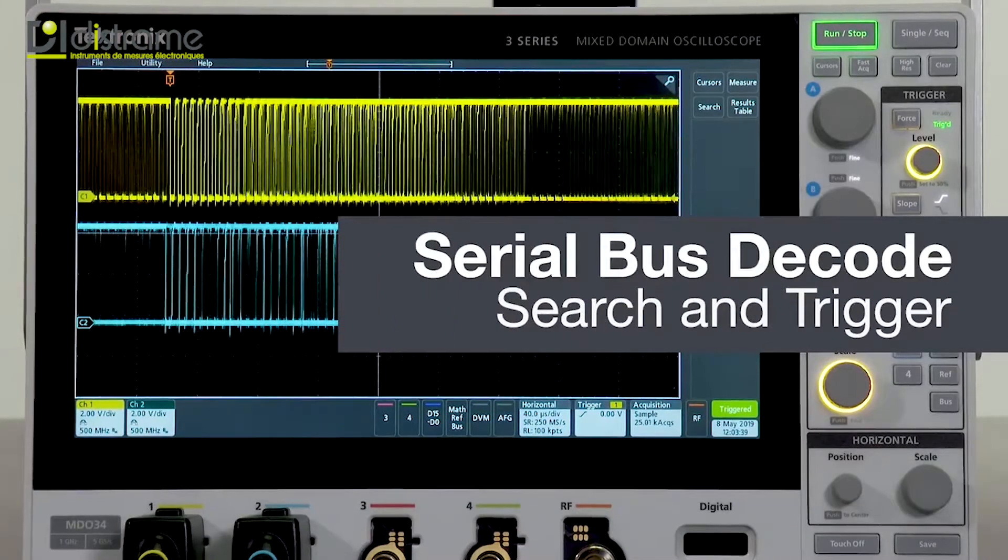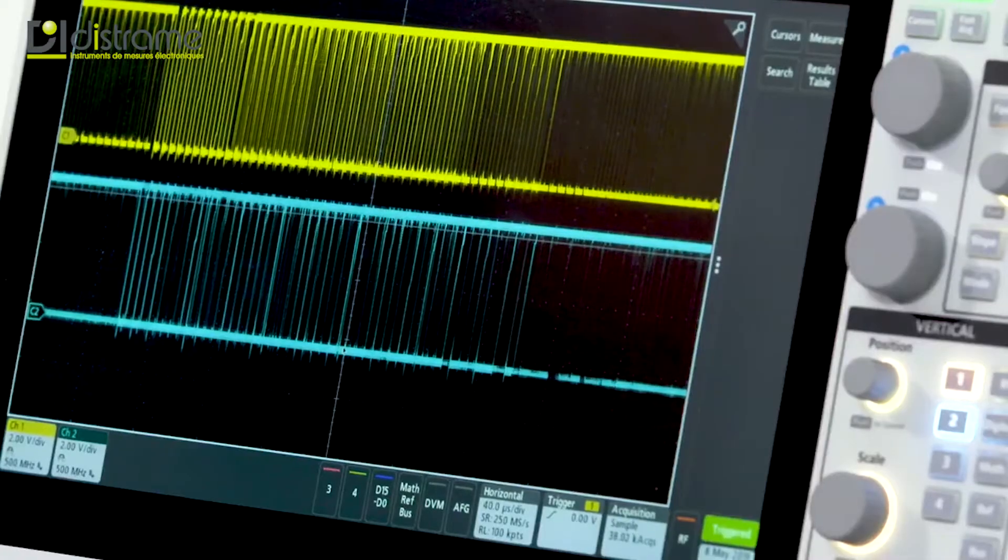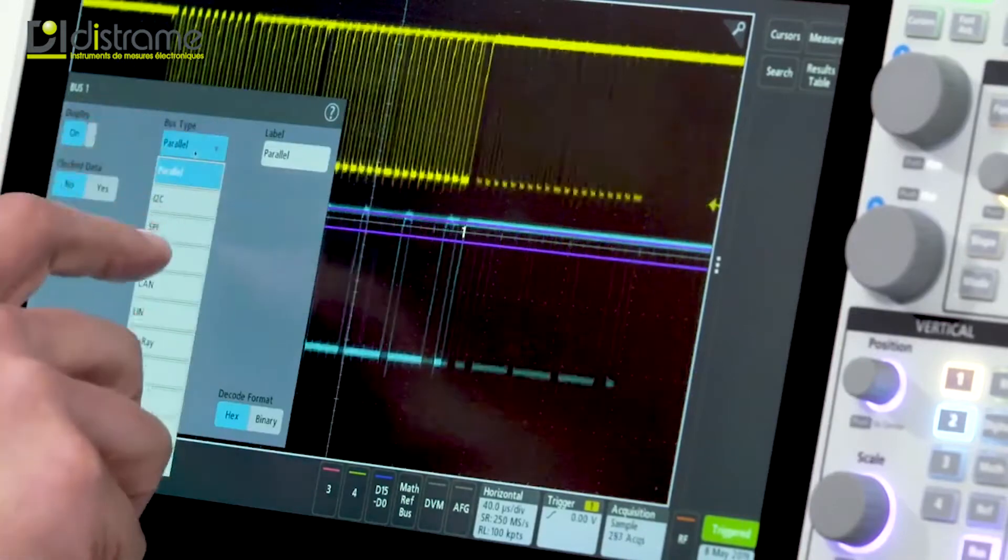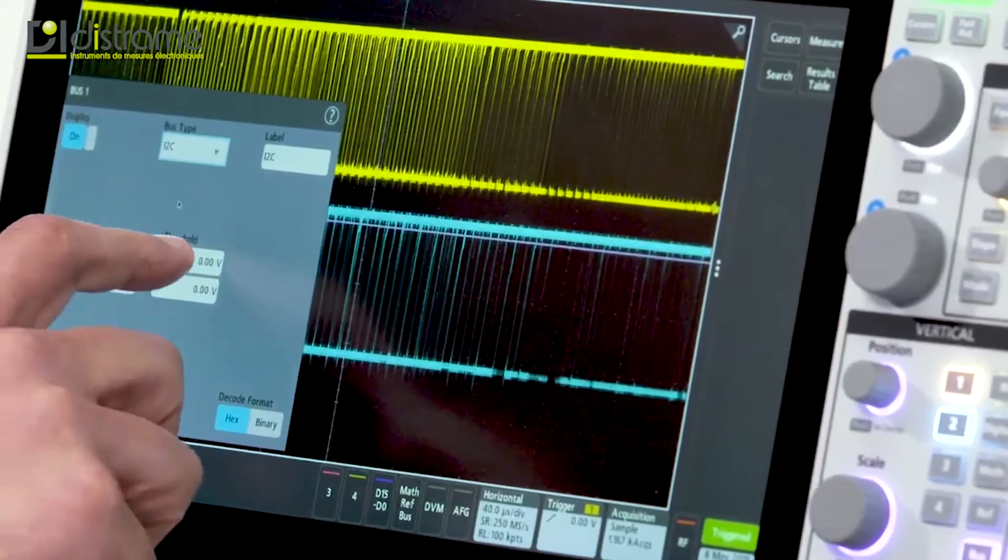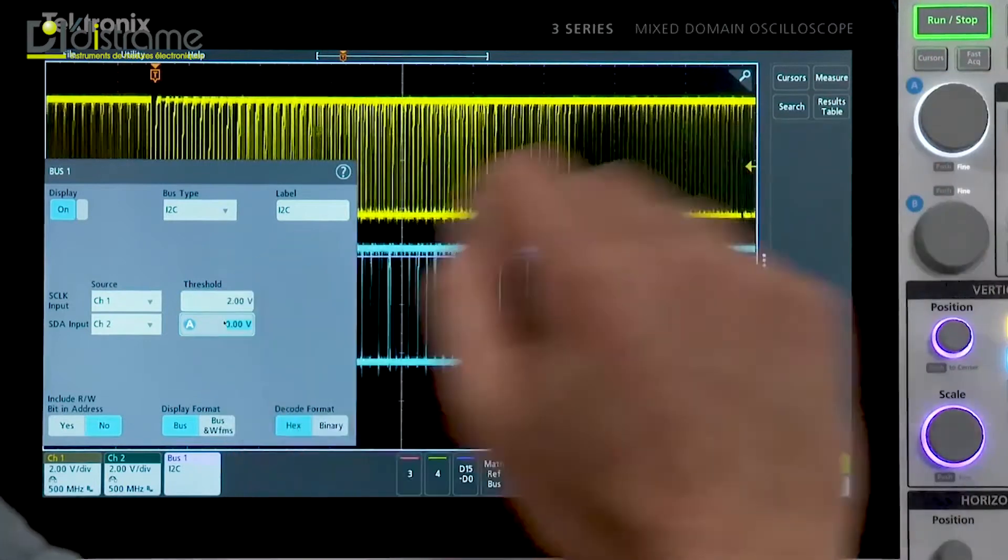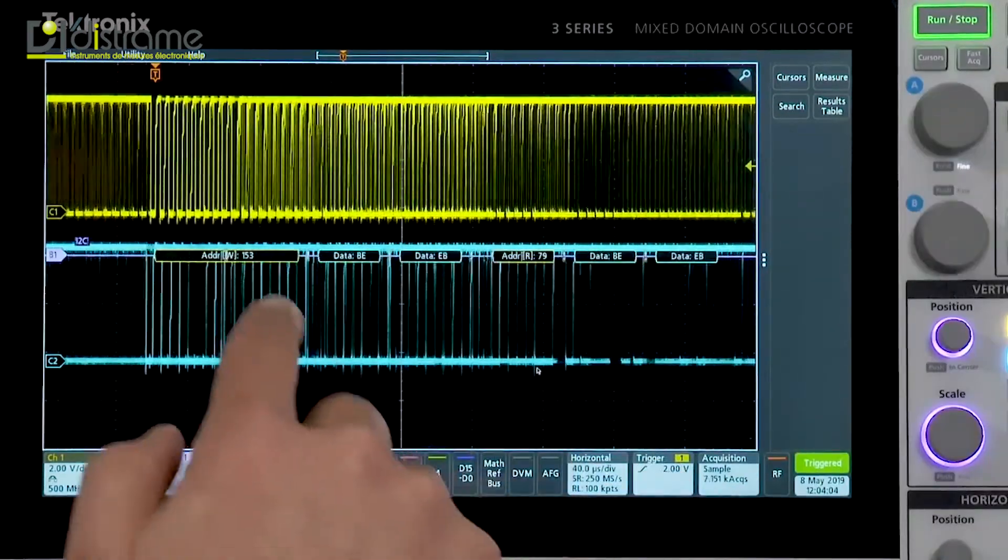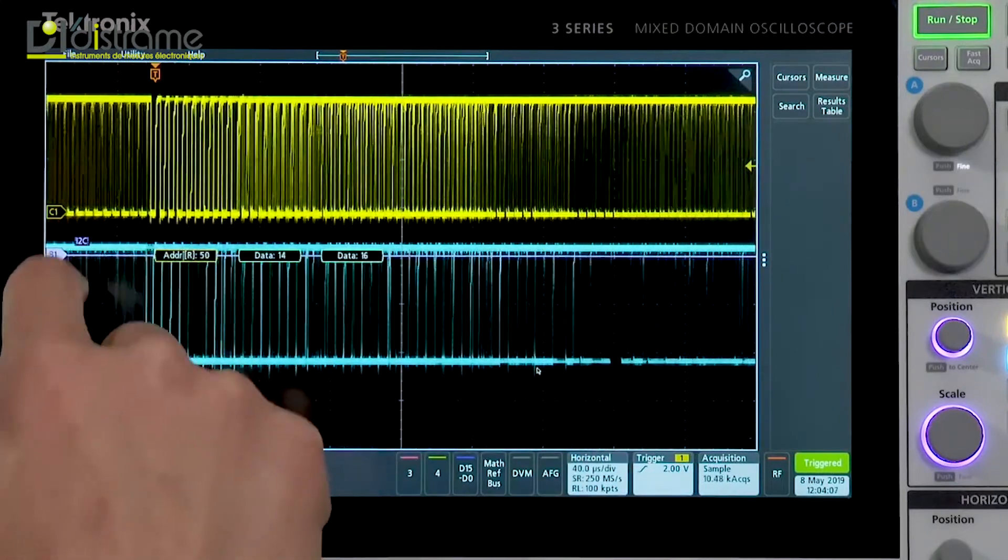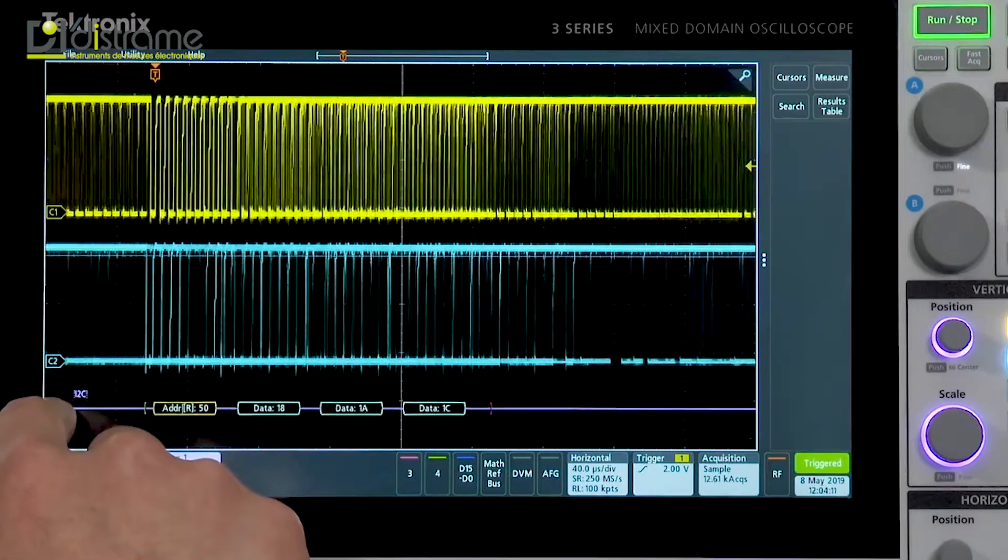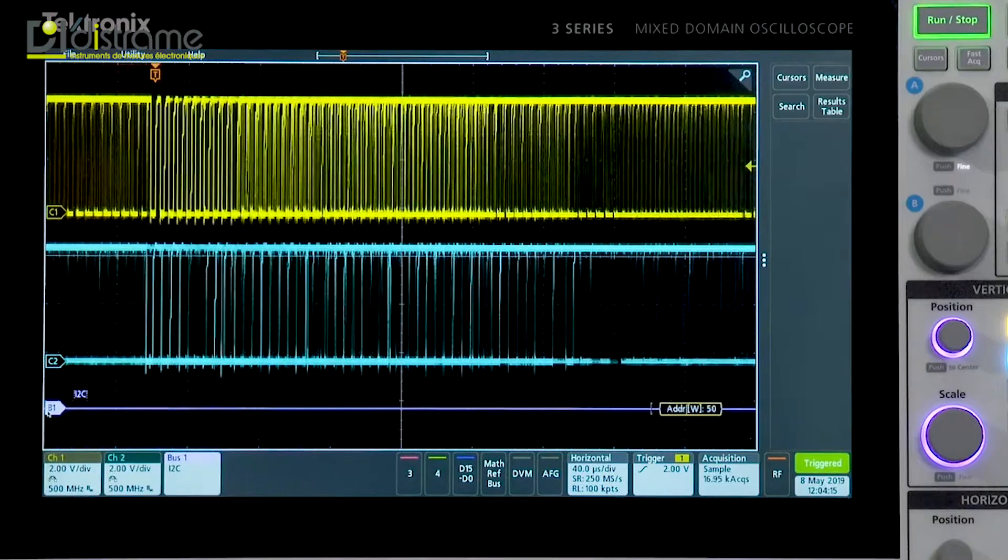You can quickly and accurately decode serial buses with the 3-series MDO. To get a bus view, I will select bus 1, and I'm going to tell it I want to look at I squared C, and set my thresholds. You can see that I'm now getting decoded serial bus information here. I'll move this bus down here so it's easier to view, and we can see addresses and data packets and such going by.